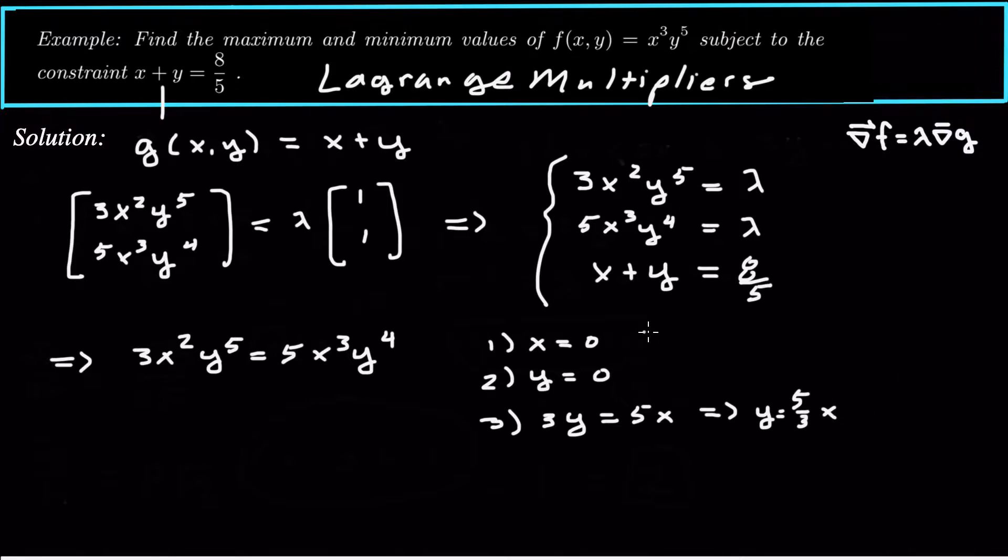All right, so now we solve each case. So in the first case, if x is 0, this equation tells me y would equal 8 over 5, so y would equal 8 fifths. So my first critical point would be 0, 8 fifths. Similarly, if y is 0, then x would be 8 fifths.